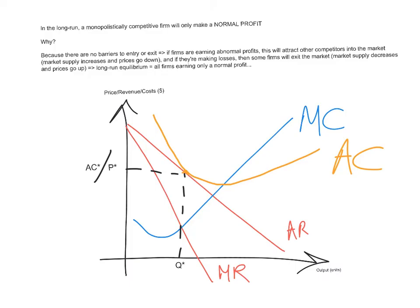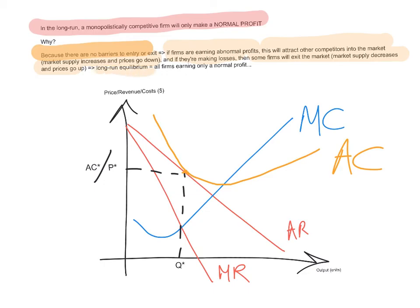Why? Because of the assumption that there are no barriers to entry or exit. If any firms are earning abnormal profit, this will attract other competitors into the market, which causes market supply to increase and prices to go down. And if any firms are making losses, then some firms will exit the market — therefore market supply decreases and prices go up. So the long run equilibrium occurs when all firms are earning only a normal profit. In the short run they can make normal profit, abnormal profit, or a loss, but in the long run monopolistically competitive firms can only earn a normal profit because of the absence of barriers to entry or exit.